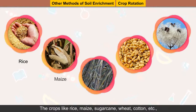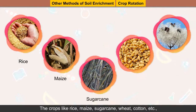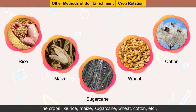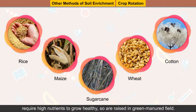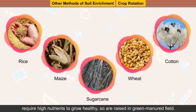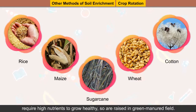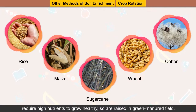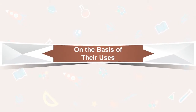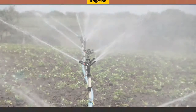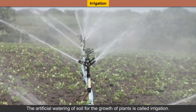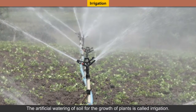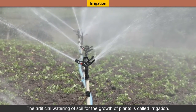The crops like rice, maize, sugarcane, wheat, cotton, etc. require high nutrients to grow healthily, so they are raised in green manured fields. Irrigation: The artificial watering of soil for the growth of plants is called irrigation. The seeds sown in the soil need water to emerge as tiny plants.